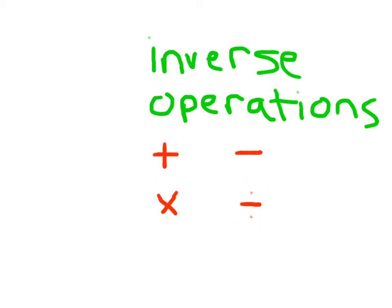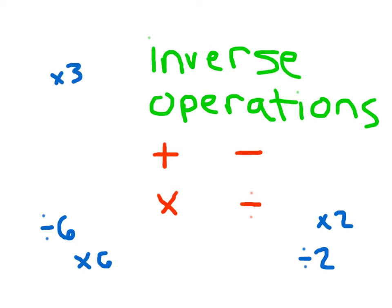So if we were to multiply by 2, the inverse — the opposite of multiplying by 2 — would be dividing by 2. Those would be inverses of each other. If we were to divide by 6, the inverse of dividing by 6 would be multiplying by 6. If we were to multiply by 3, the inverse operation would be dividing by 3.